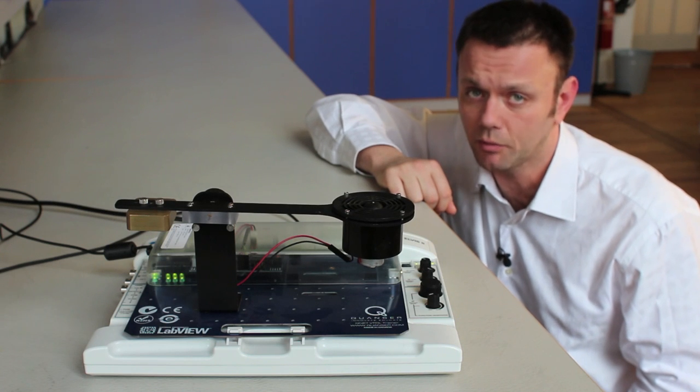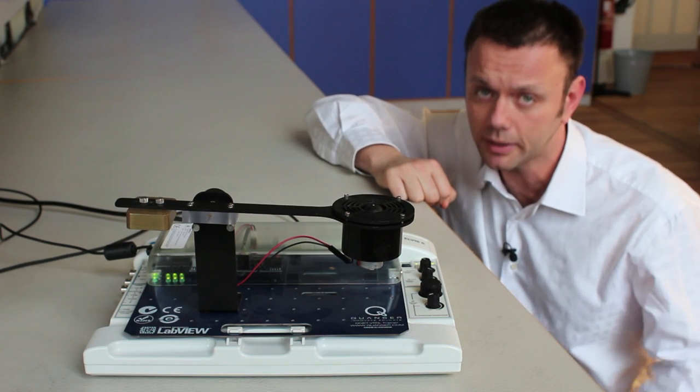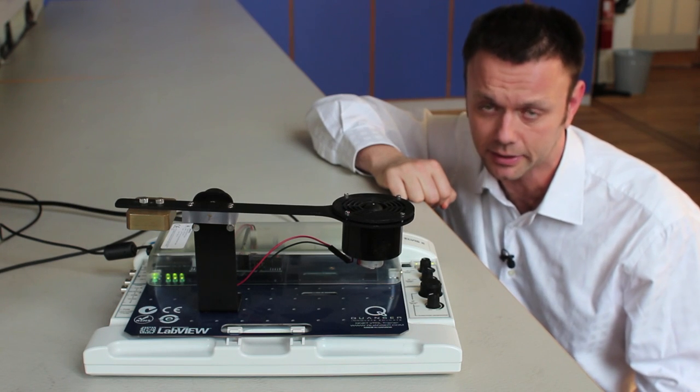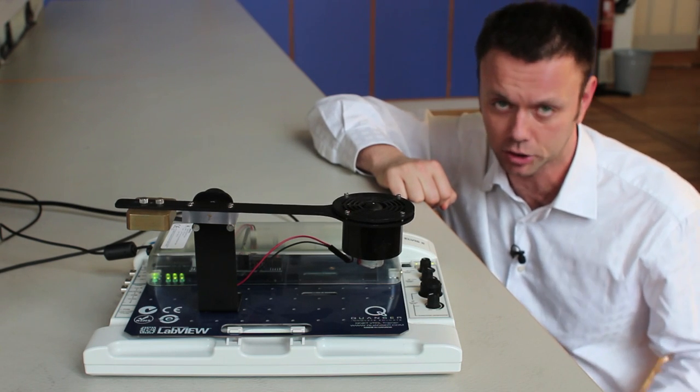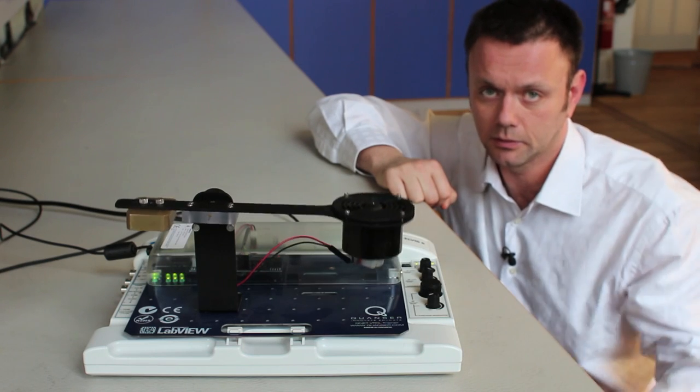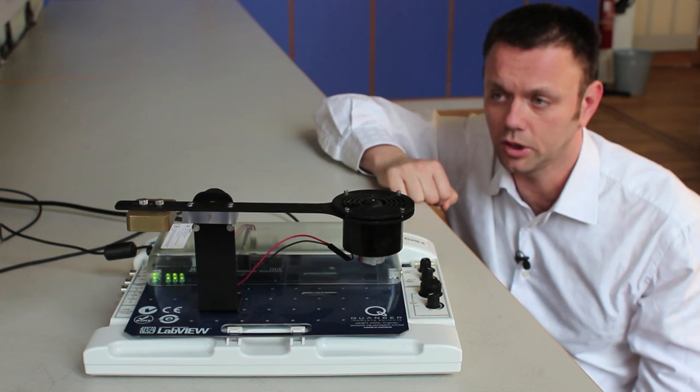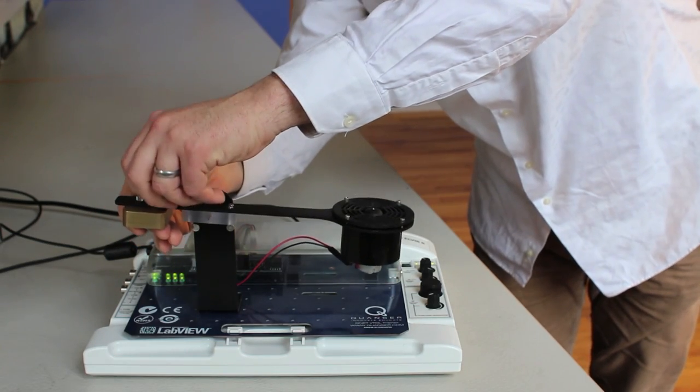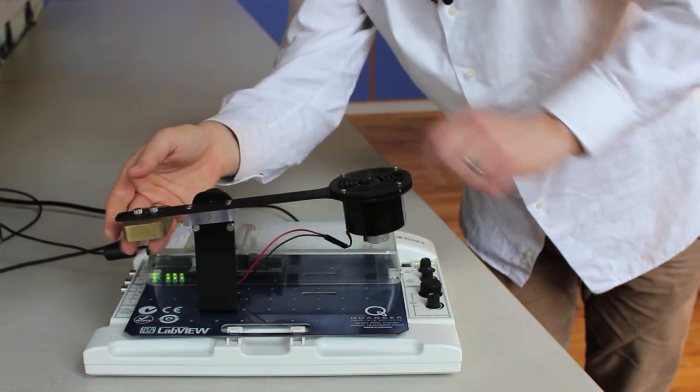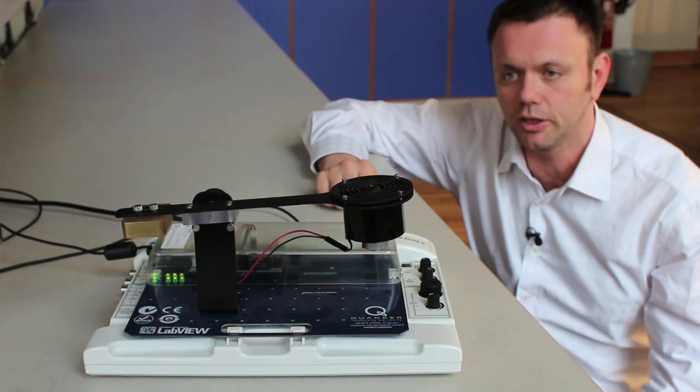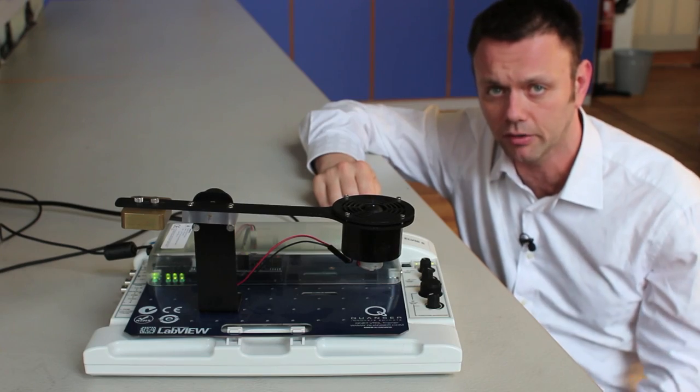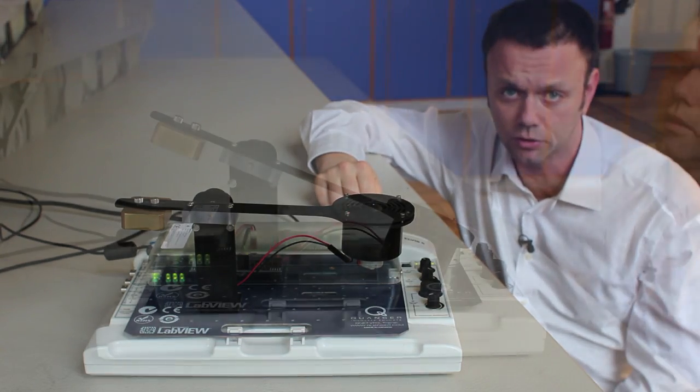And also we can notice how when the disturbance occurs oscillations are minimal. Now this is the type of behaviour we didn't see before when we didn't employ feedback control. But now with the feedback control in place the oscillations are much much less pronounced. Also if we change the counter weight which before would result in a completely different angle, now after initial change in the angle control system modifies the operation and brings the hovercraft back to where it wants it to be.